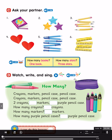Page 25 C. Ask your partner. Number 1: How many books? One book. Number 2: How many stars? Three stars. Number 3: How many pencils? Five pencils.